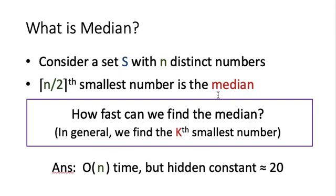To find the median, we can do so in deterministic O(n) time, so we do not need any randomization. However, the hidden constant of this big-O is large — it is 20. So the deterministic algorithm guarantees finding the median with at most 20n comparisons. But if we make use of randomization, can we do better?